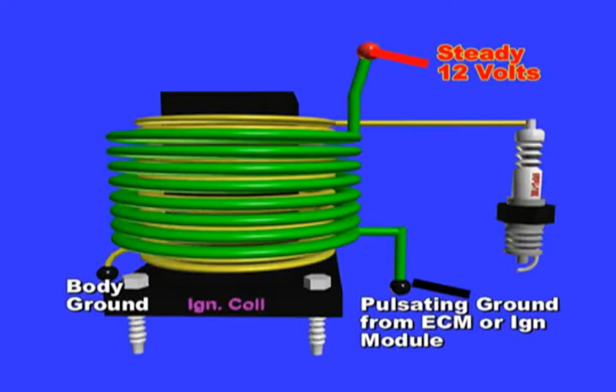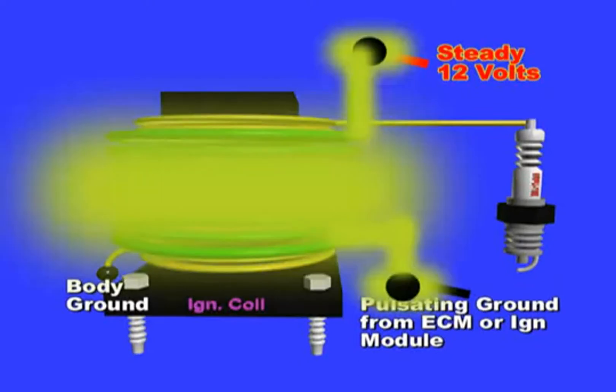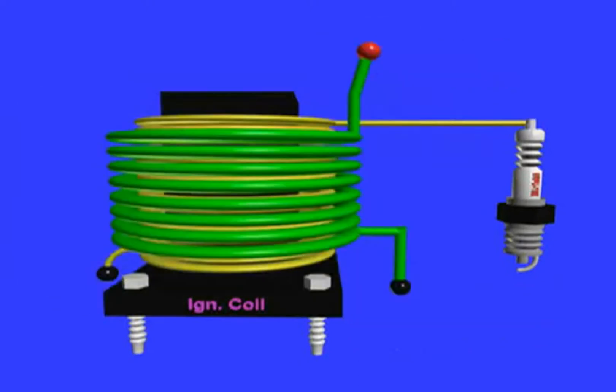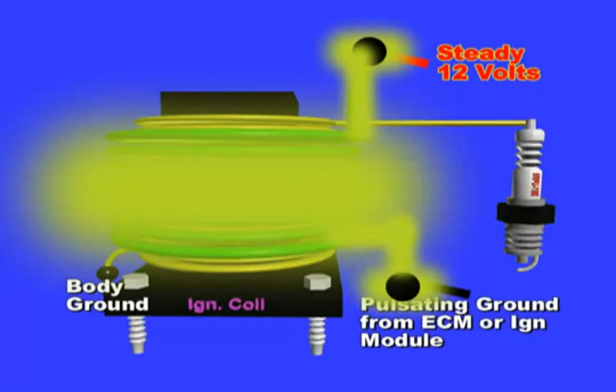The ECM or module always looks for a returning voltage through the coil itself. So, the 12 volts is connected at one side of the coil, then through the coil itself, and is seen right at the module or ECM terminal.